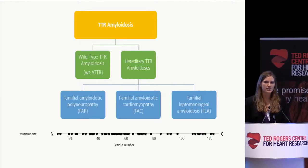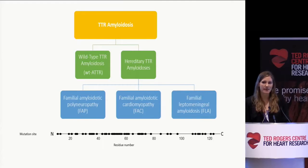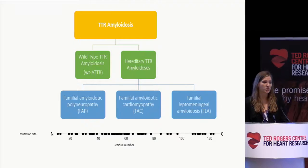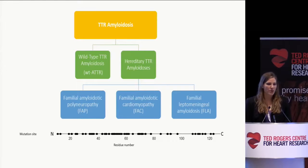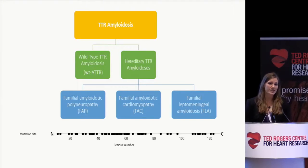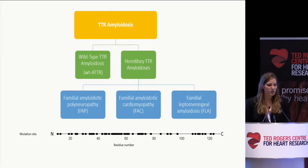TTR amyloidosis can be divided into two different types. The first is wild-type TTR amyloidosis, or wild-type ATTR, characterized by deposition of wild-type TTR amyloid throughout the body. Signs and symptoms are non-specific and often misinterpreted, and include cardiac amyloidosis manifesting as a slow restrictive cardiomyopathy, retinopathy, polyneuropathy, and bilateral carpal tunnel syndrome. The second is hereditary TTR amyloidosis, characterized by deposition of mutant TTR amyloid, further divided into familial amyloid polyneuropathy, familial amyloidic cardiomyopathy, and familial leptomeningeal amyloidosis. The mutations identified in patients worldwide span the entire protein.